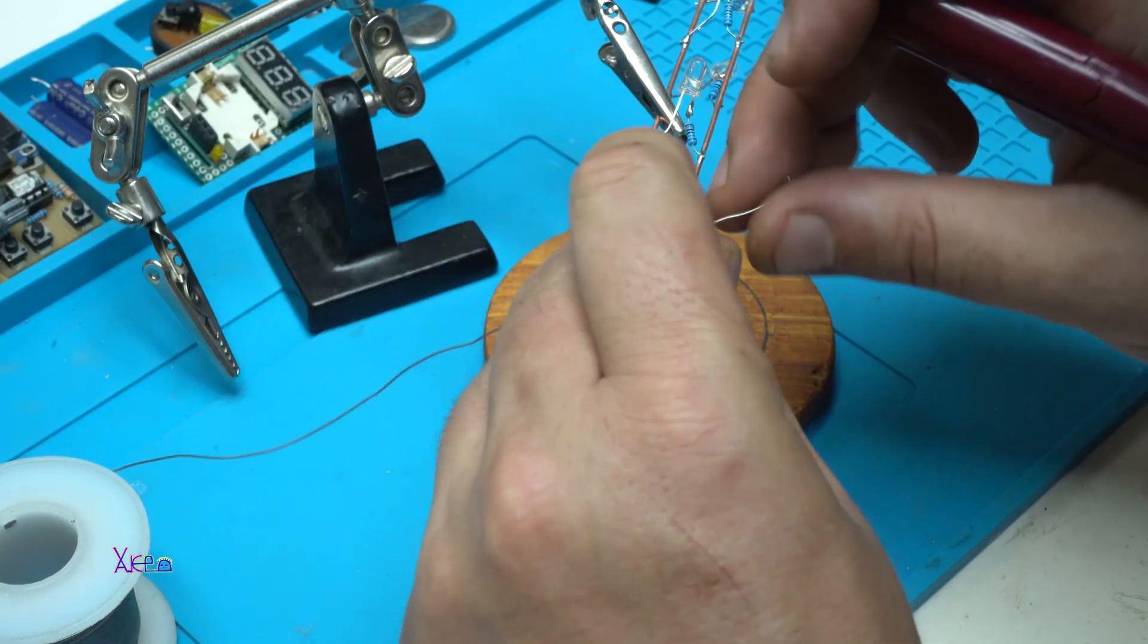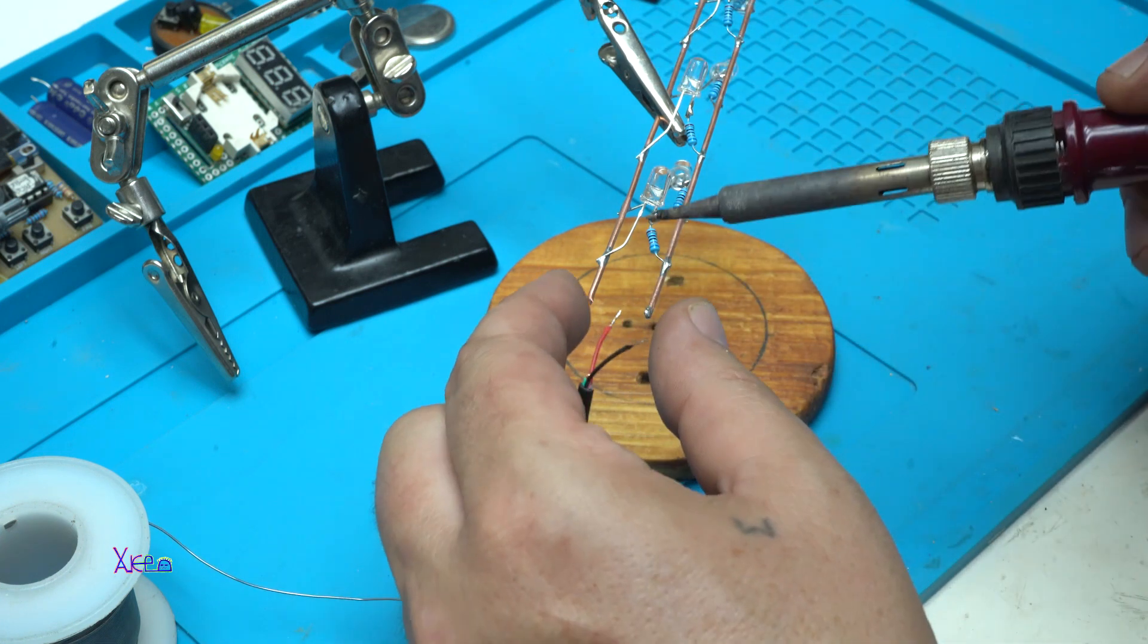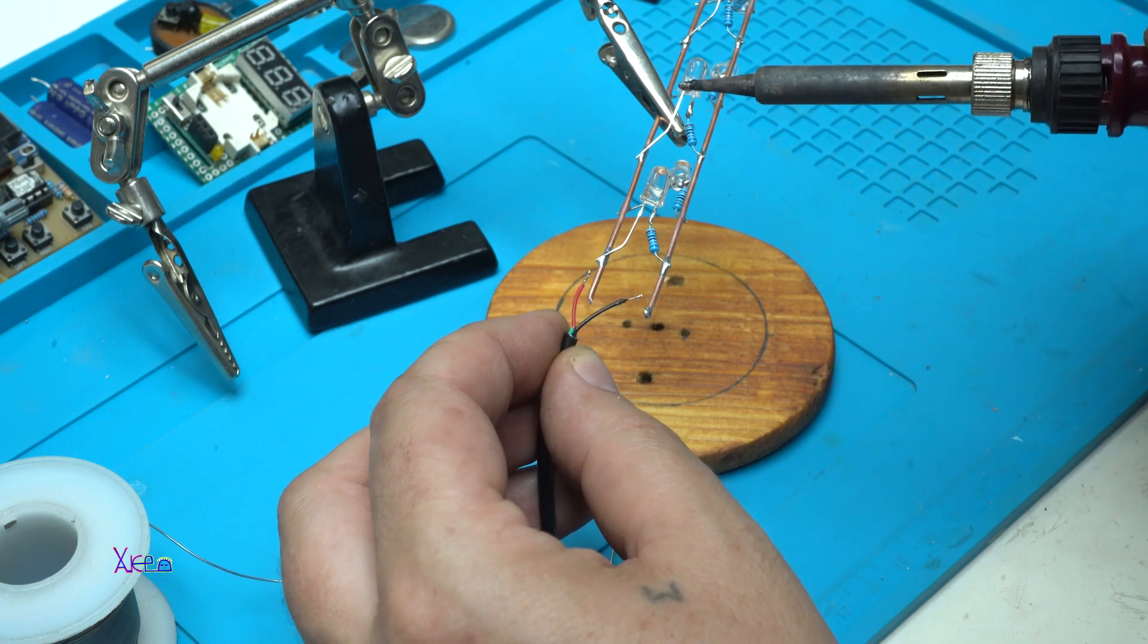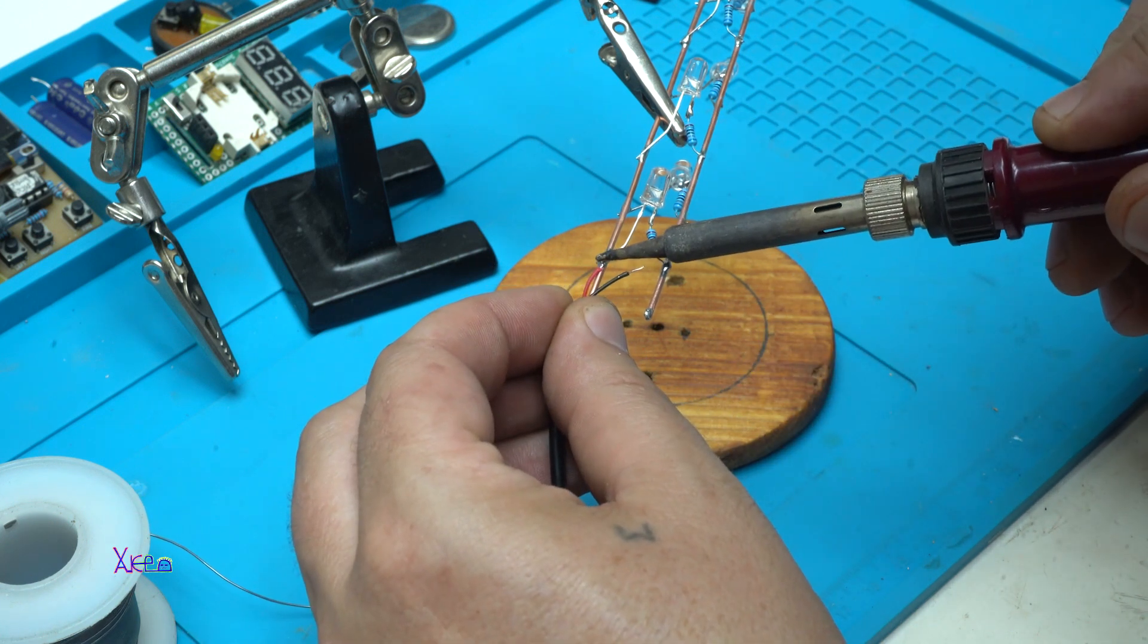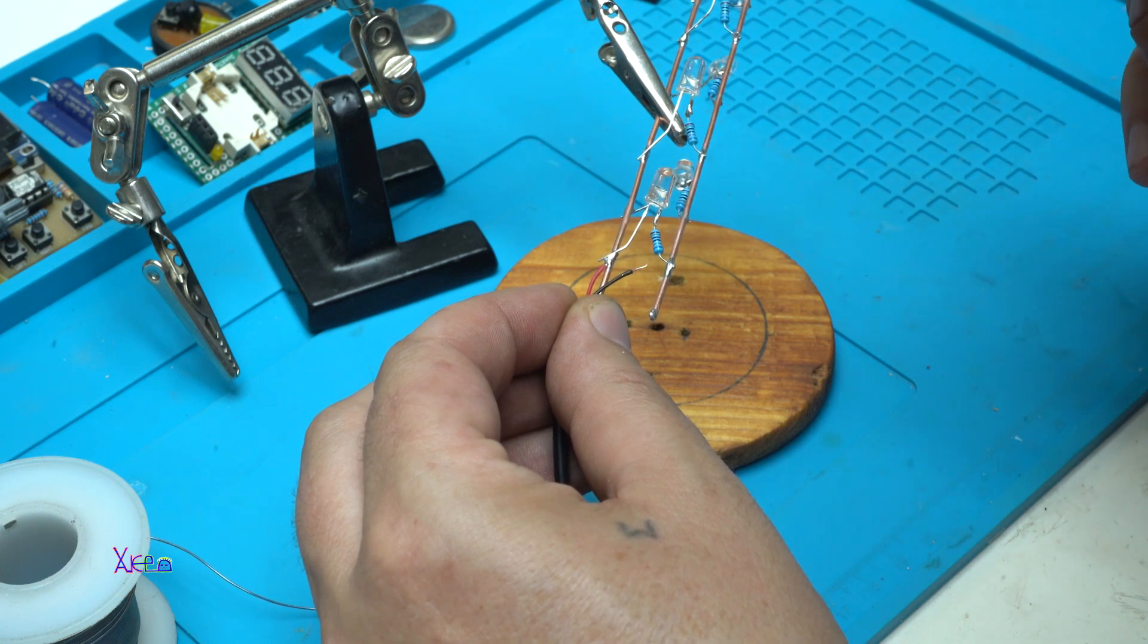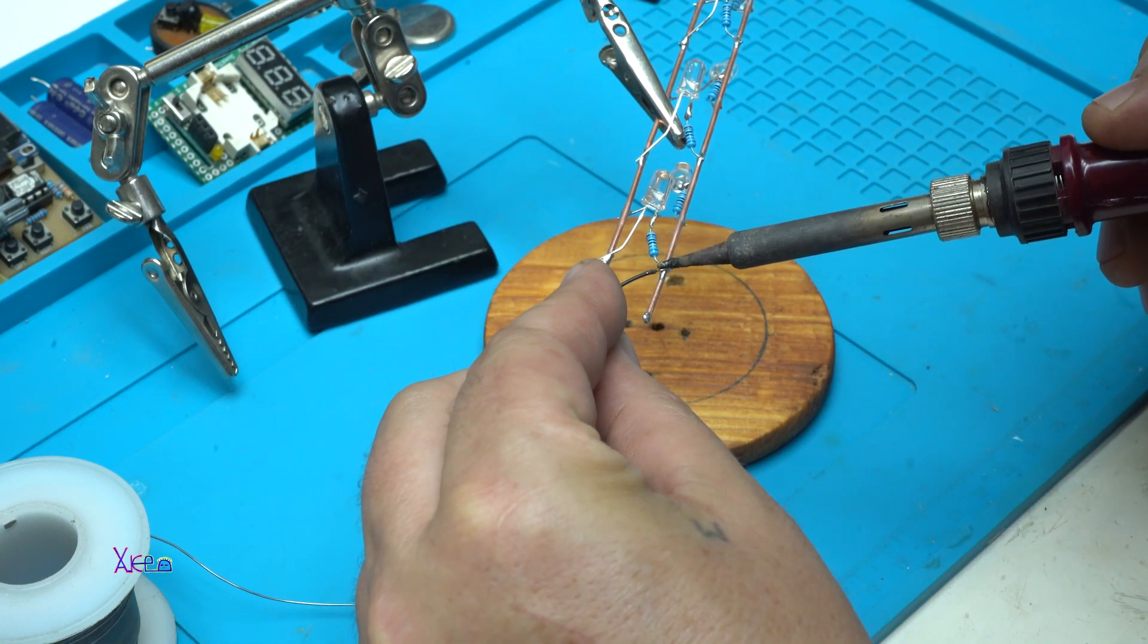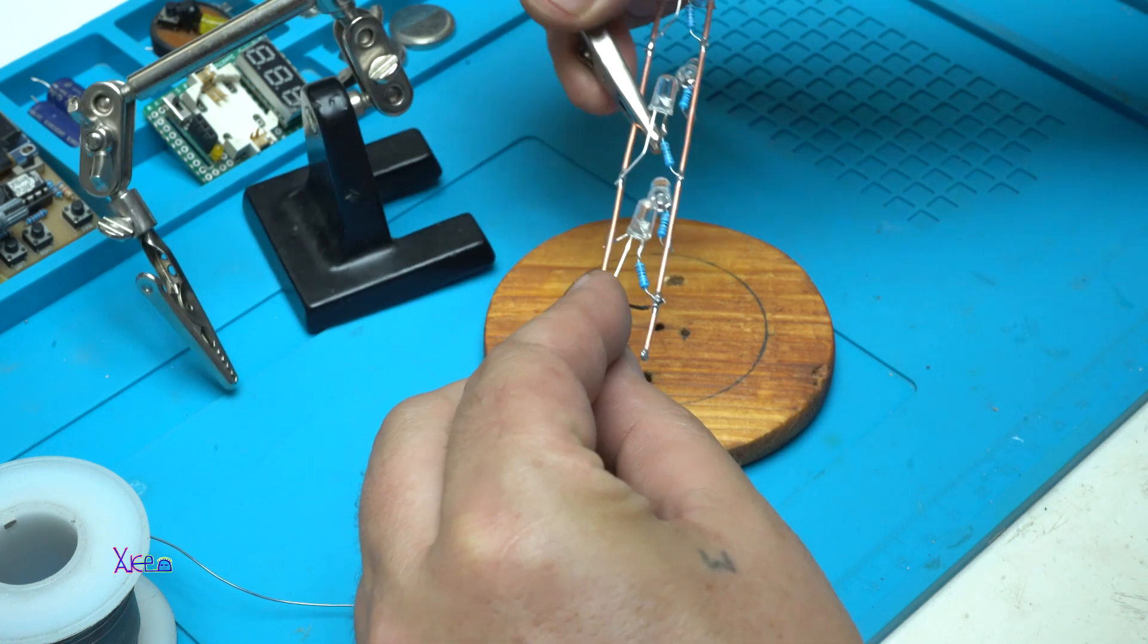First I'm going to solder the USB cable that has positive and negative wires to my homemade LED strip that is made out of 6 LEDs. This one is positive and negative. Let's solder like this. Positive. Now I'm going to solder the negative. Okay, we are finished here.